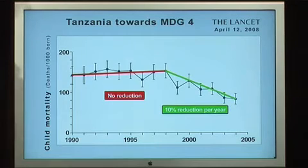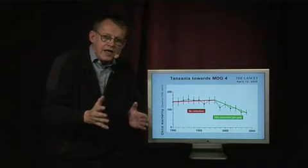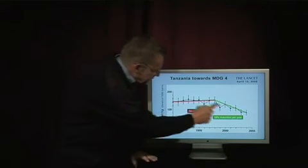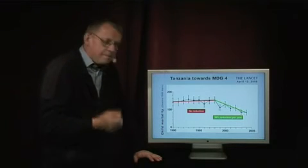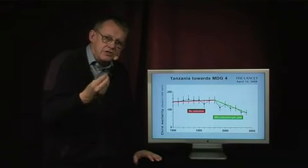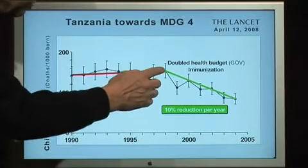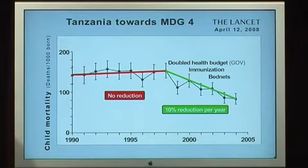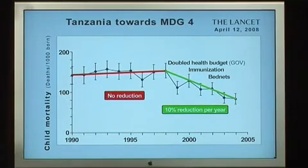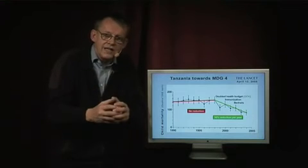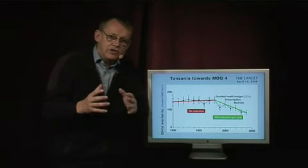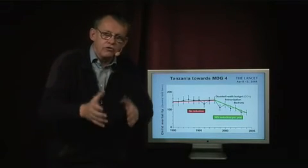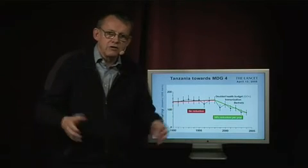The Tanzanian and international researchers who did these careful studies were cautious — they noted this is a short period with an uncertainty range — but said it is highly probable because at the same time certain actions were taken: the Tanzanian government doubled the health budget, Tanzania now has economic growth, aid organizations provided vaccines and immunization through an international coordinated effort, and bed nets were provided to protect children against malaria deaths.